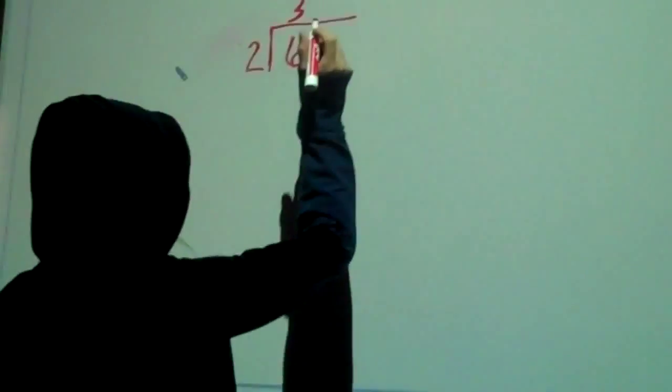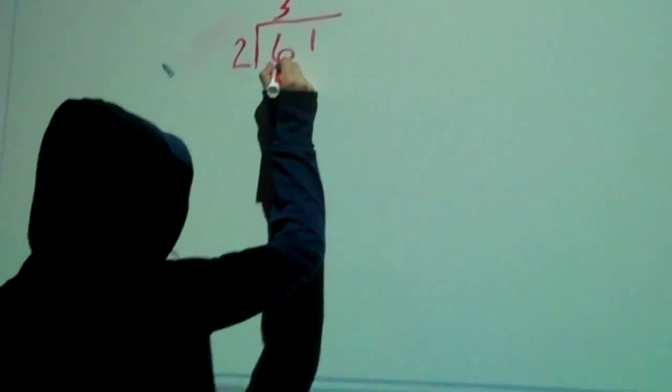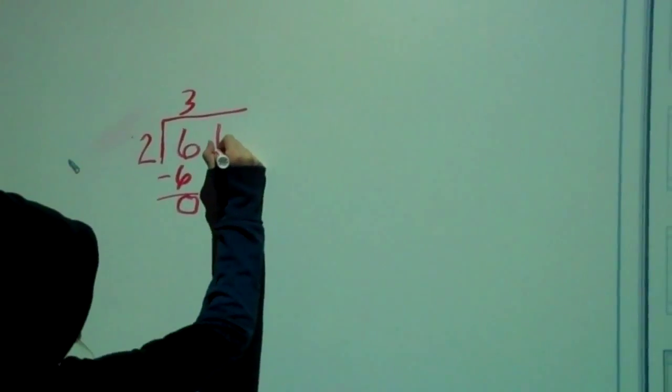2 goes into 6, 3 times, which equals 6. 3 times 2 is 6, so you put the 6 down.